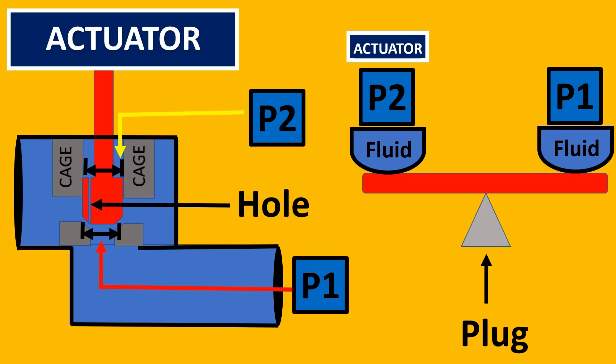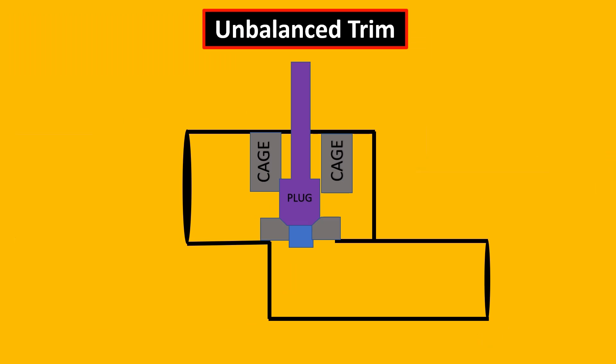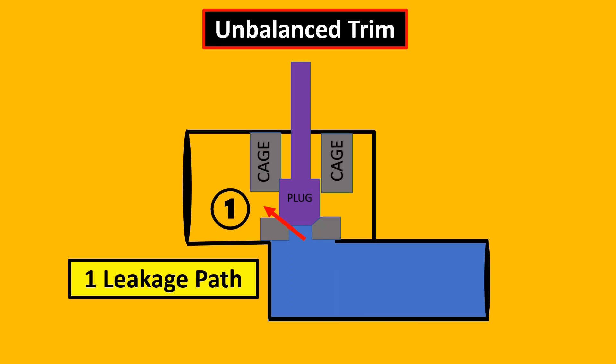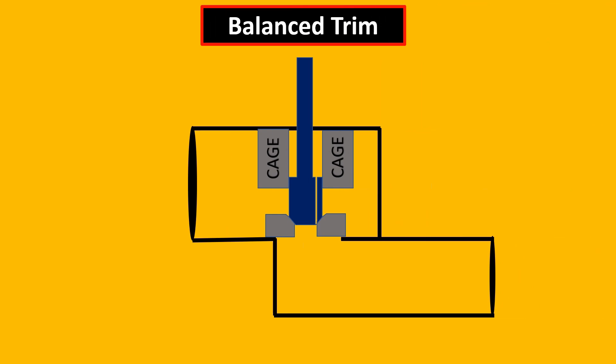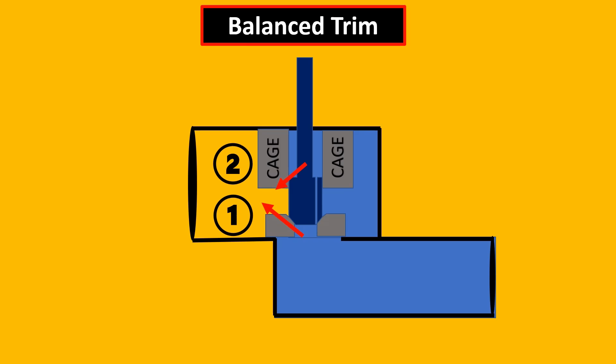Now if you notice, you might think we should always go for a balanced design, right? But that is not the case. In an unbalanced trim, there is only one leakage path. But compare that to a balanced design—because there is flow through the hole, there are two leakage paths possible. This is one of the biggest drawbacks of a balanced trim design.